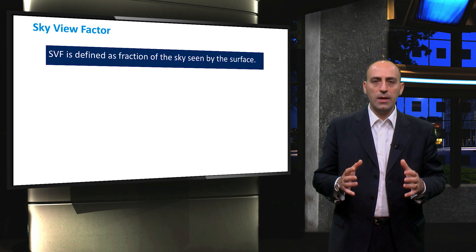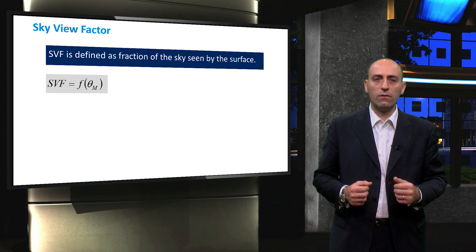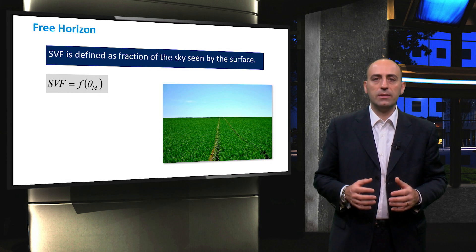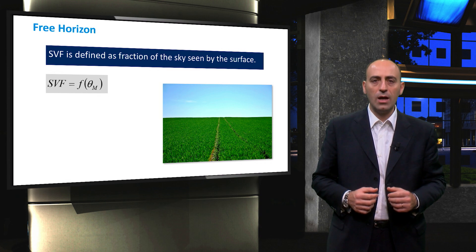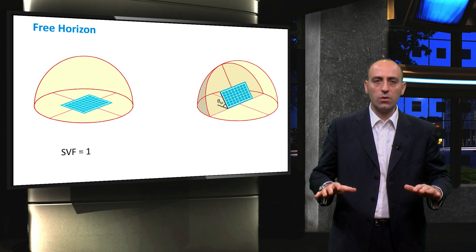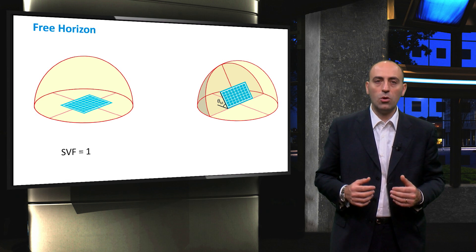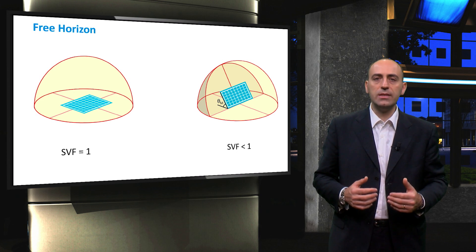The SkyView factor, as you know, is defined as the fraction of the sky that a surface sees, and it is a function of the tilt angle of the PV module. In an ideal case — that is, for a free horizon where there are no surrounding obstacles present — the SkyView factor is related to the tilt angle of the PV module according to this equation. For example, the SVF for a module placed horizontally is simply 1, while for a tilted module, the SVF decreases depending on its tilt angle, since the module sees a smaller fraction of the sky. This method is very useful to calculate the SkyView factor when the PV system is located in a free-horizon condition.